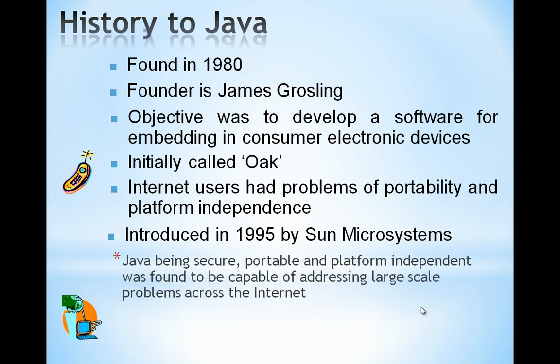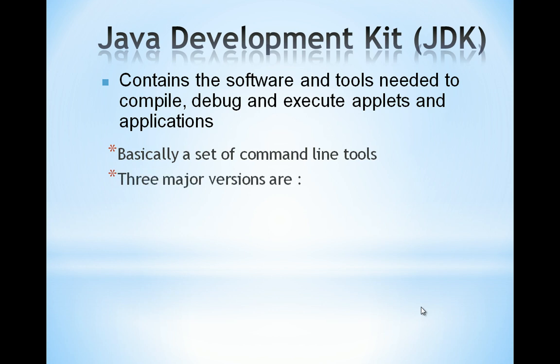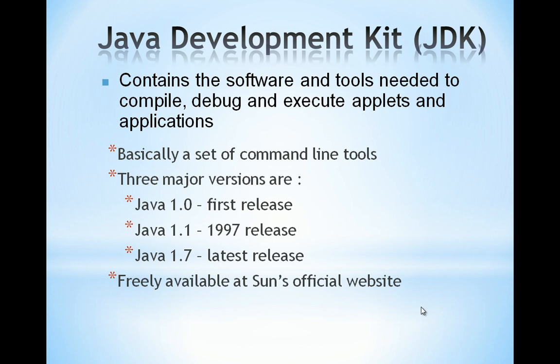Java, being secure, portable, and platform independent, was found to be capable of addressing large-scale problems across the internet. If you install Java on your system, a JDK folder is created. JDK stands for Java Development Kit — all the things needed to compile, debug, and execute Java programs or applets, including all command-line tools, are available under the JDK folder. The latest version is 7.0 and this software is freely available at the Sun Microsystems official website.